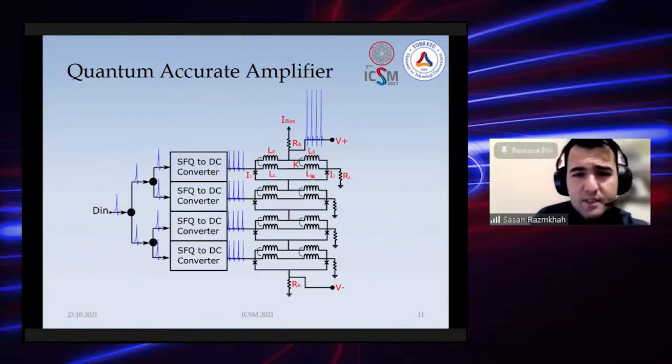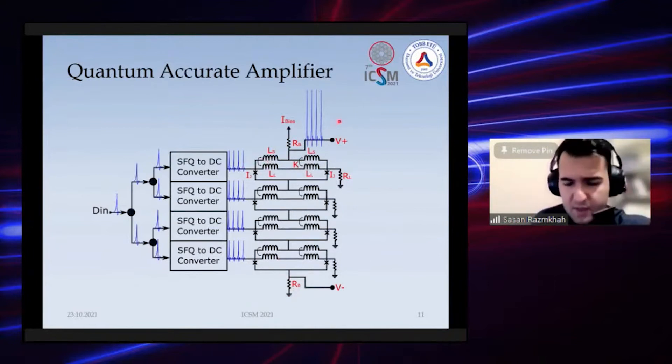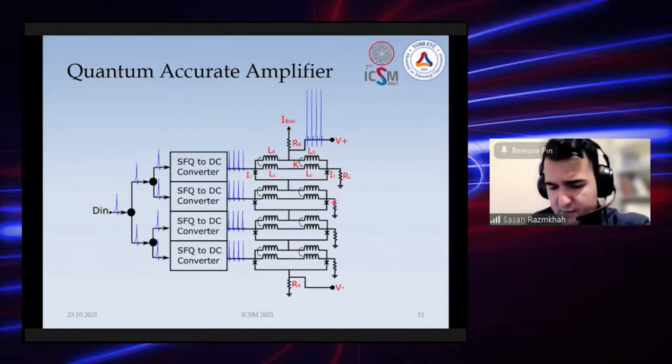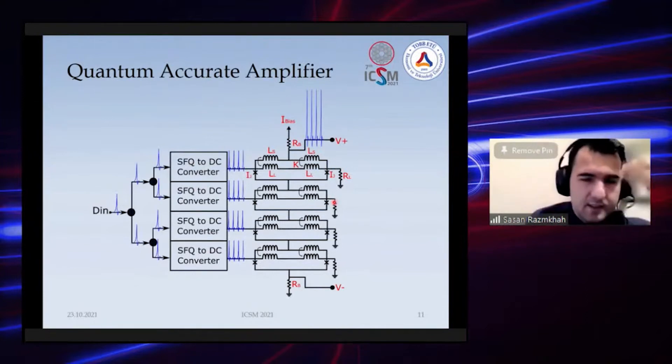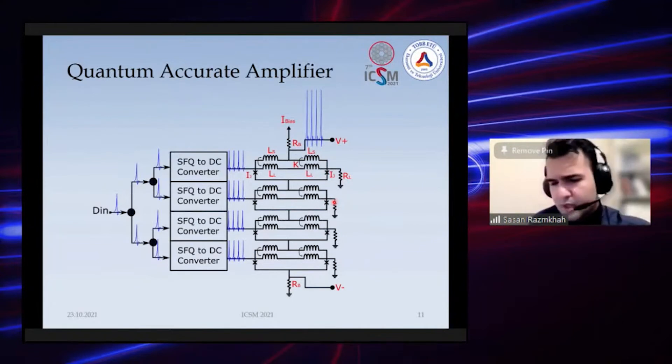When we make these at the right frequency, at the right match, and bias them with the right amount, we can add these pulse energies to one big pulse or one big DC output. This was the basis of our amplifier that we designed. Since I gave this abstract, we have published this in 2021, I think in January.